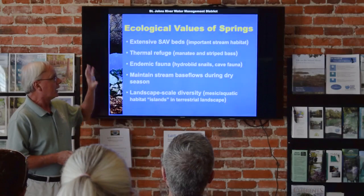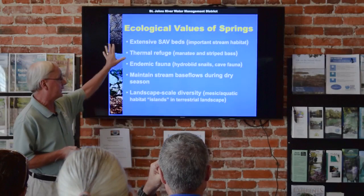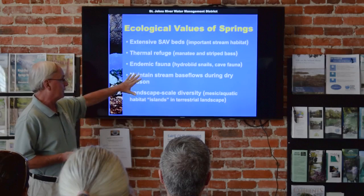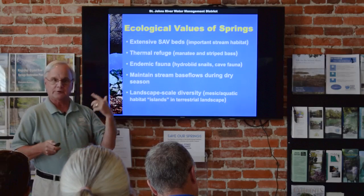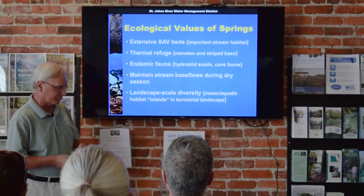The ecological values of springs — we're going to dwell on these quite a bit. Extensive submerged aquatic vegetation beds, and I'll show you quite a bit of data on that. They provide a thermal refuge — warm water for manatees, cool water for striped bass. Springs, particularly here in North Florida, keep our streams flowing during the dry seasons. We had an exceptionally dry winter and spring, and every St. Johns spring run I visited was all spring water — no surface water runoff because it was so dry. And they add what I call landscape-scale diversity.